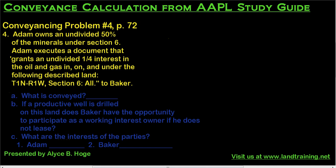Now we are moving on to conveyance problem number four. This is on page 72 of the AAPL study guide. What you're being tested on here is how well you can read an instrument and what the different meanings are — and how critical the wording is in an instrument. So let's start reading: Adam owns an undivided 50% of the minerals under section six. Adam owns a 50% mineral interest.